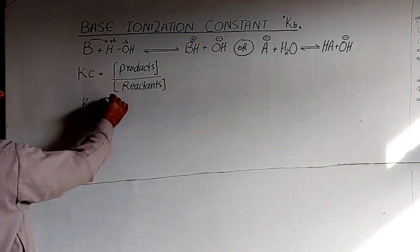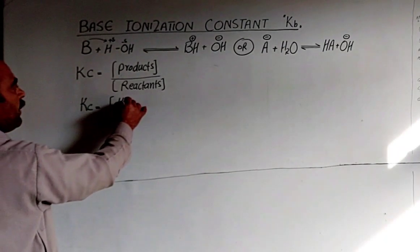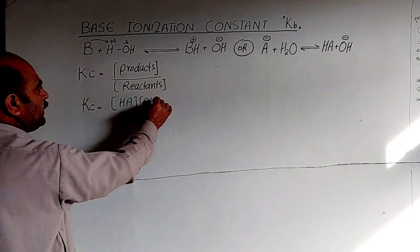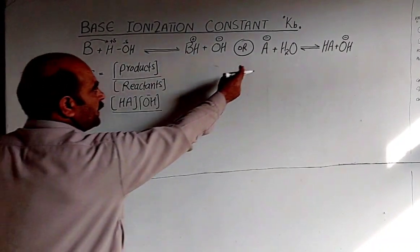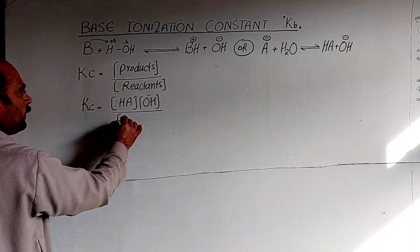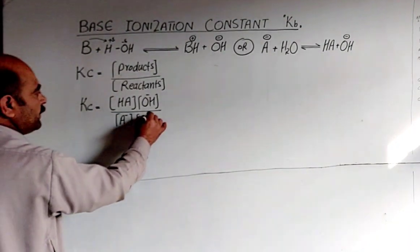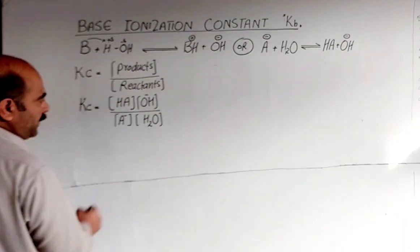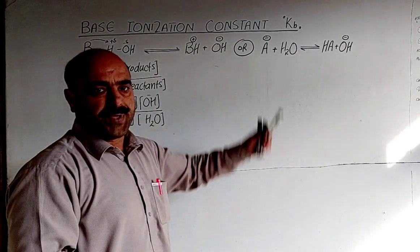Kc equals the concentration of HA⁺ multiplied by the concentration of hydroxide ions (OH⁻), divided by the concentration of the base (A) multiplied by the concentration of water (H₂O).